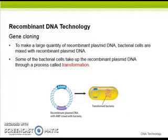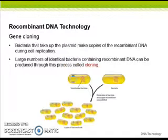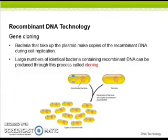To make a large quantity of recombinant plasmid DNA through gene cloning, bacterial cells are mixed with recombinant plasmid DNA. Some bacterial cells take up the recombinant plasmid DNA through a process called transformation. Bacteria that take up the plasmid make copies of the recombinant DNA during cell replication, and large numbers of identical bacteria containing recombinant DNA can be produced through this process called cloning.